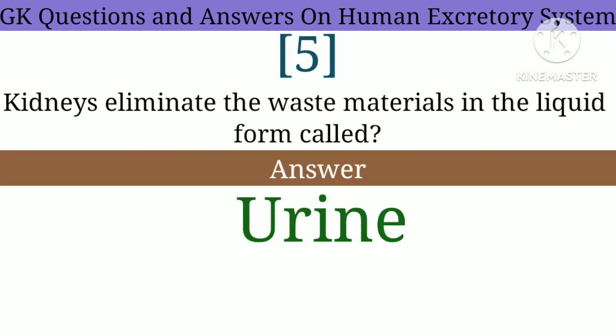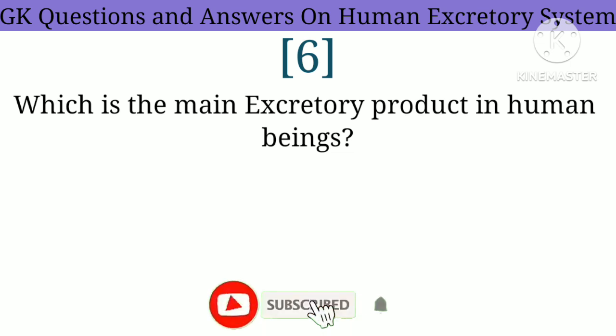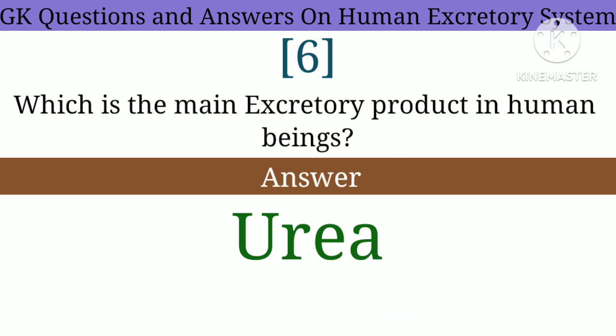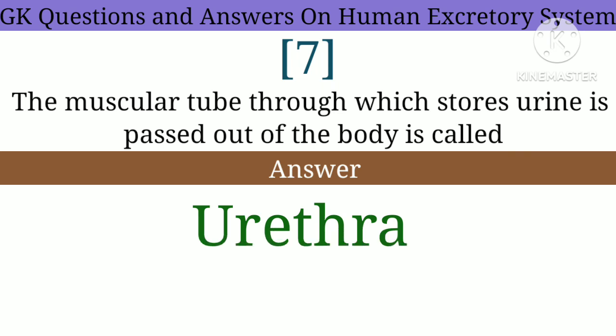Question 5: Kidneys eliminate the waste materials in the liquid form called? Answer: Urine. Question 6: Which is the main excretory product in human beings? Answer: Urea.